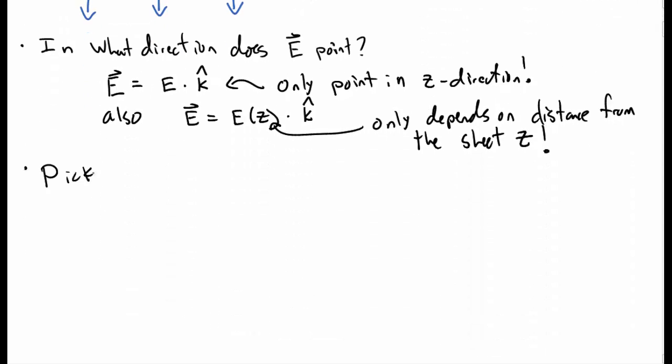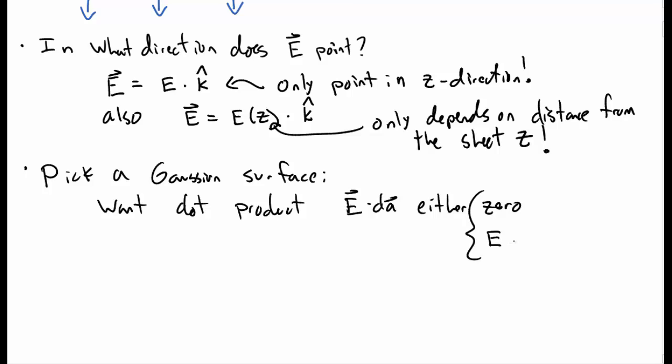Once we have the direction of the electric field, one of the next steps for Gauss's Law is to pick a Gaussian surface that's appropriate. And usually we want to pick a Gaussian surface so that the dot product, E dot dA, is either one of two things, either zero or just E times dA with no dot product. So E times dA is when electric field and the areas are in parallel directions and zero is when they're perpendicular.